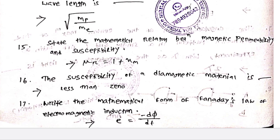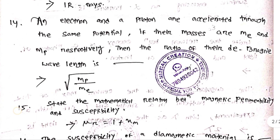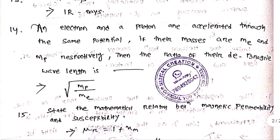Write the mathematical form of Faraday's law of electromagnetic induction: EMF (ε) = −dΦ/dt. If you have a question, you will have a long-time question.